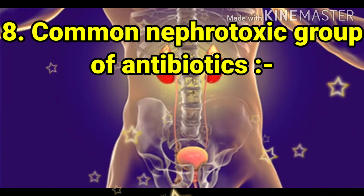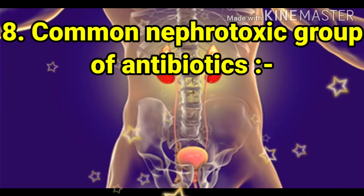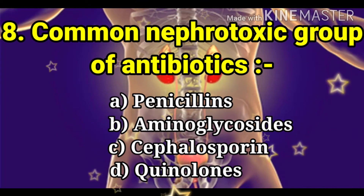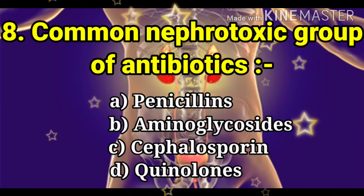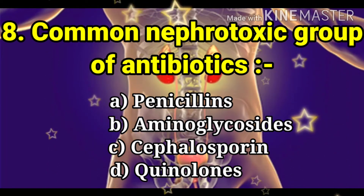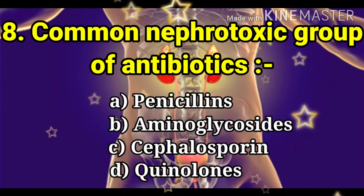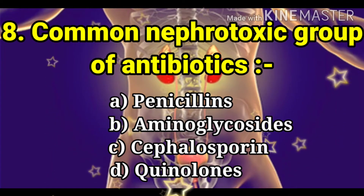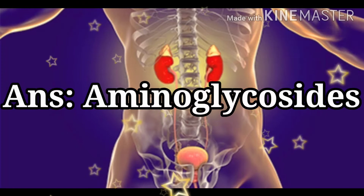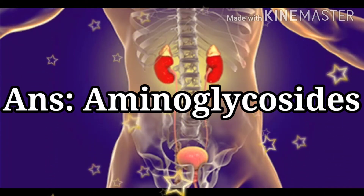Next question: the common nephrotoxic group of antibiotics. The options are penicillin, aminoglycosides, cephalosporins, and quinolones. The answer is aminoglycosides.